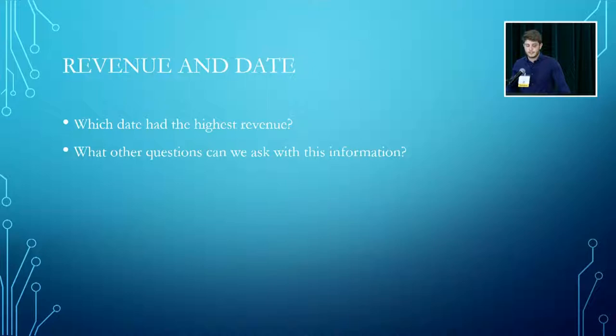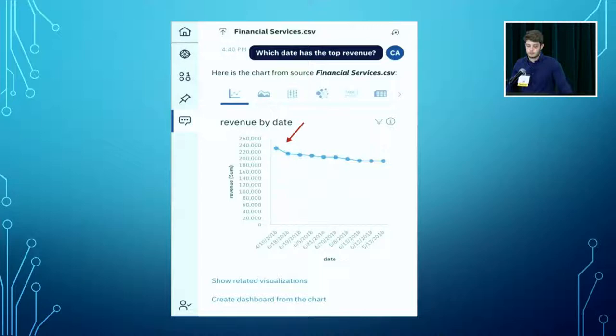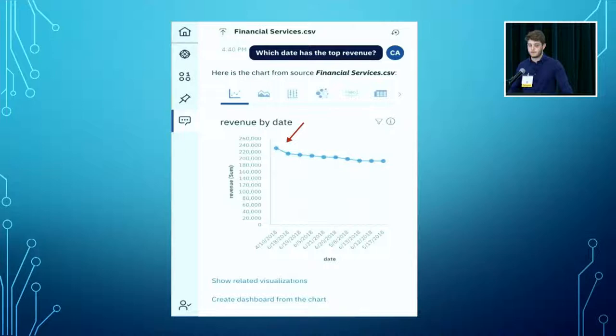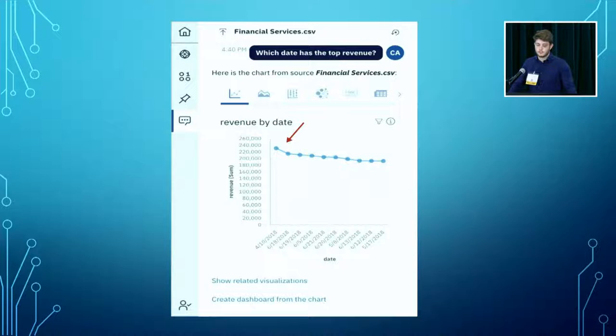We can also ask which date had the highest revenue. April 10th, 2018 was when the company had the highest revenue. That leads us to new questions — we can go to the marketing department and ask why that happened: was it a marketing campaign, a product being developed and sold at that point, or is it a specific time of year that generates more revenue every year? Those are questions that can guide better product development.